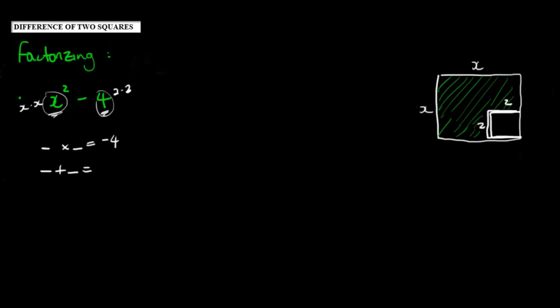So we can think about the coefficient of x as being 0x because there's no x term there. So I'm looking for two numbers that add to give me zero or two numbers that are going to make the x term disappear.